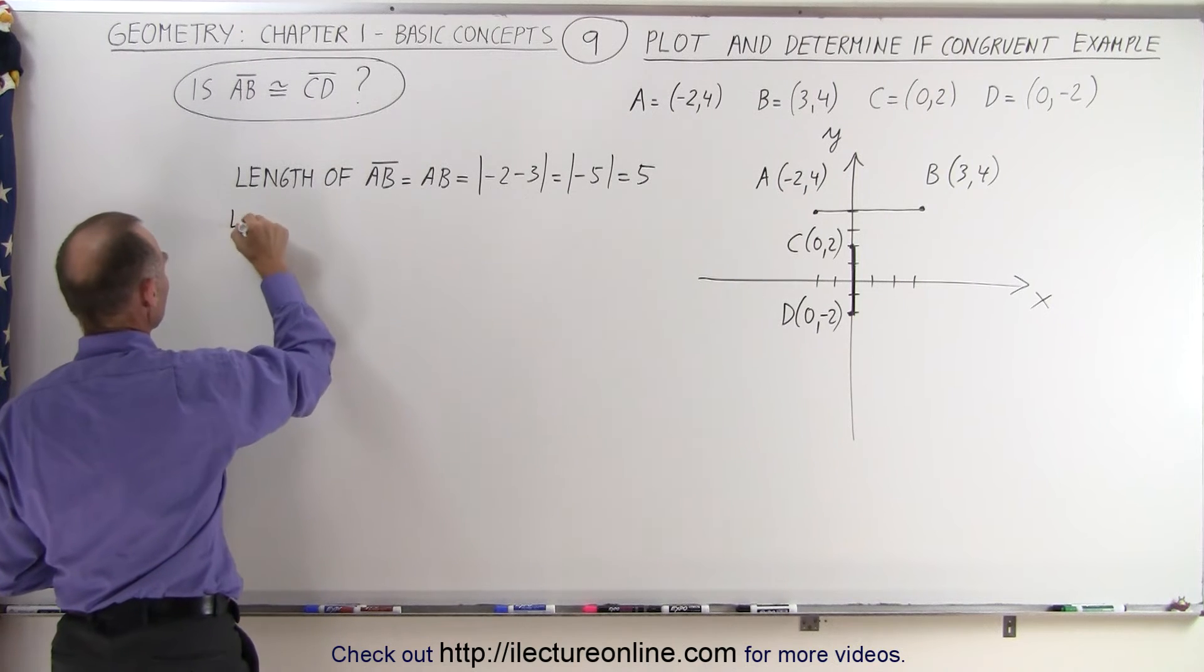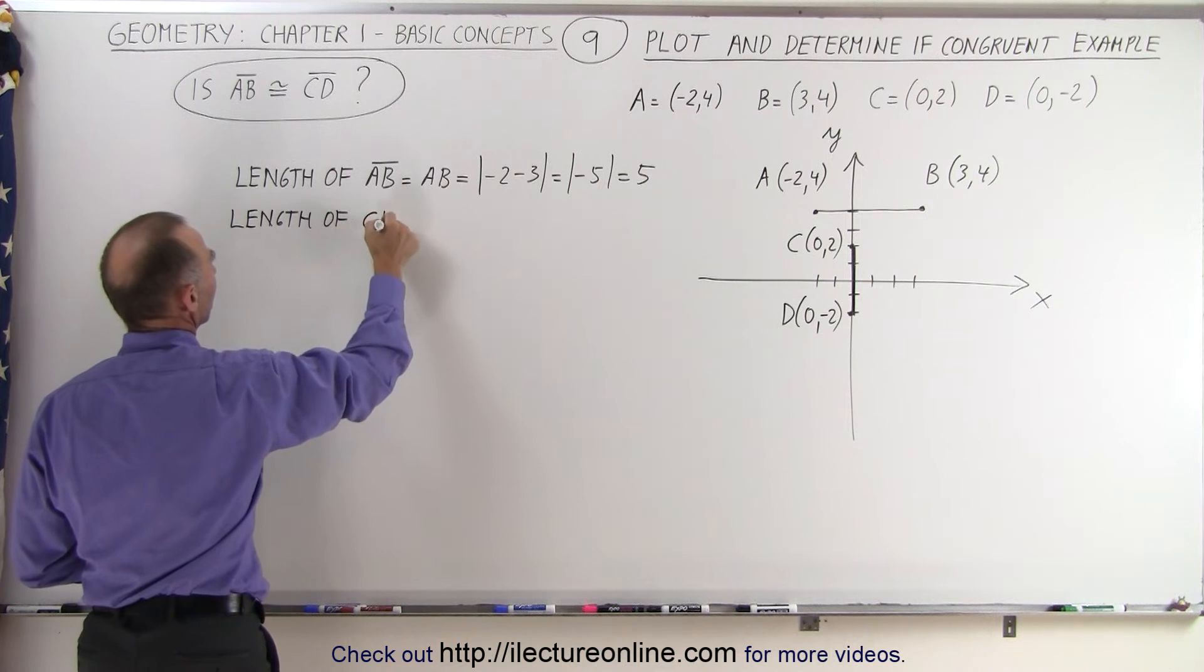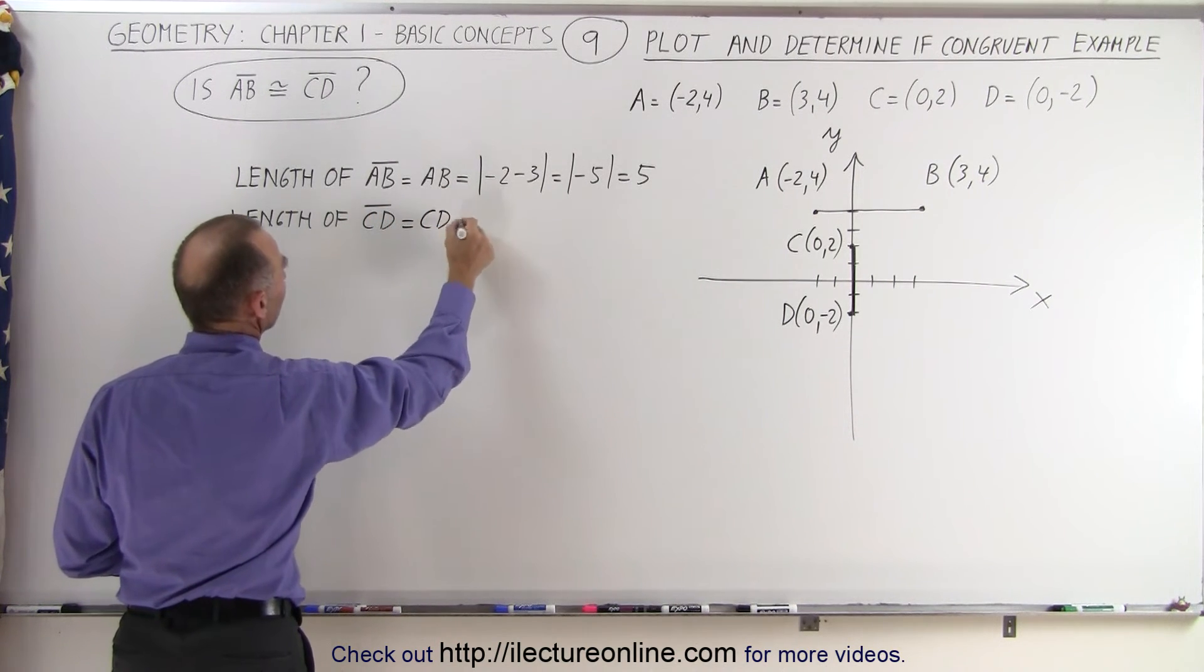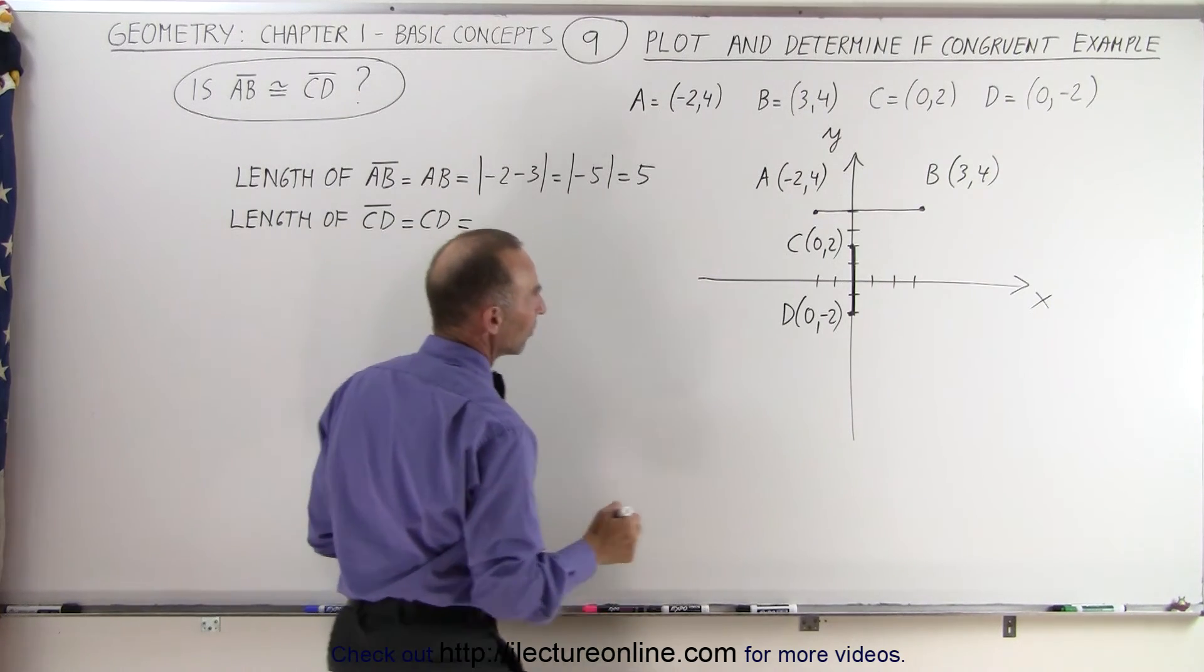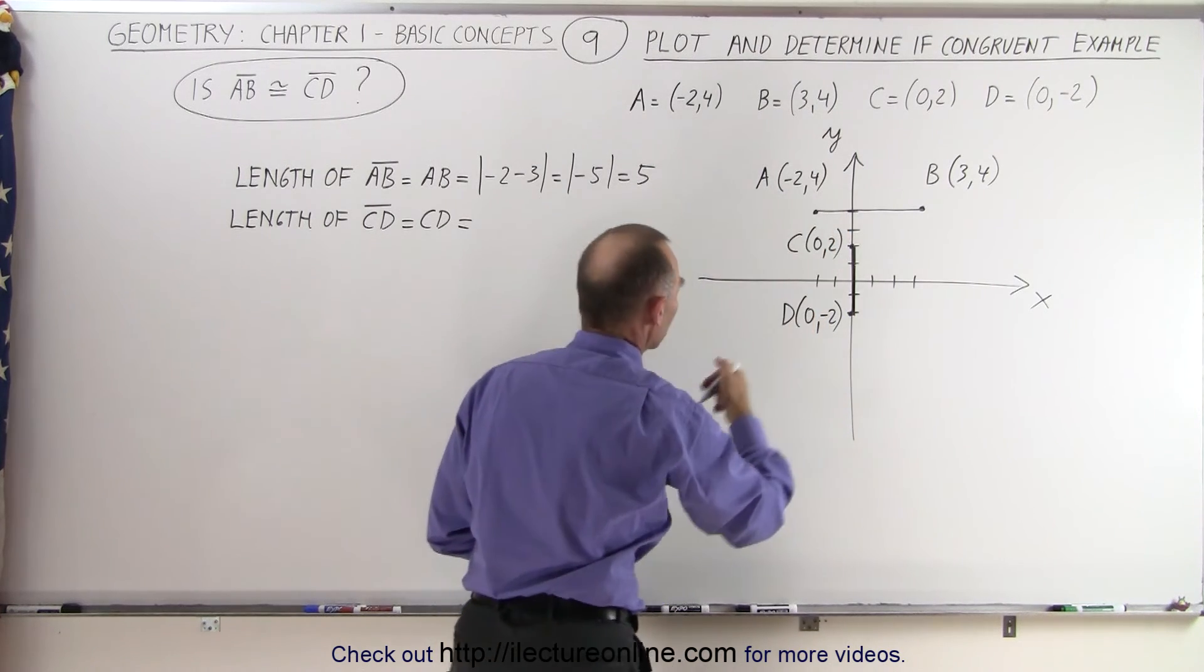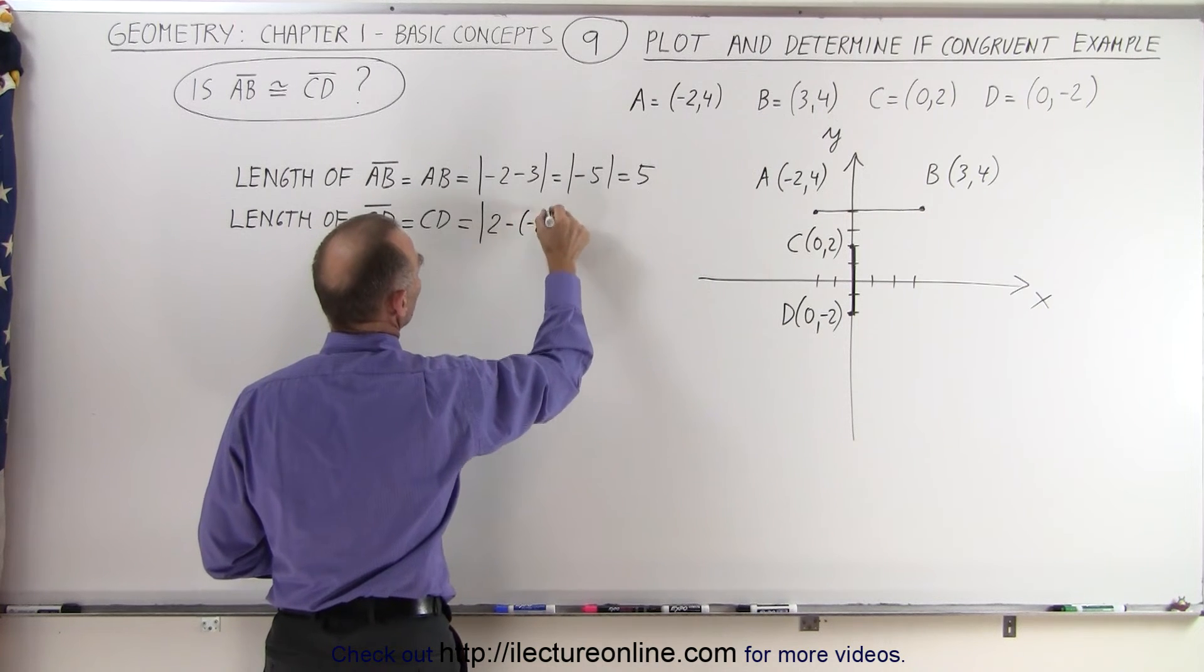Then we find the length of the other line segment, the length of line segment CD. This means the length of the line segment CD. Here we can see that the change is due to the change in the y-coordinate; the x-coordinate stays the same. So that would be 2 minus negative 2.